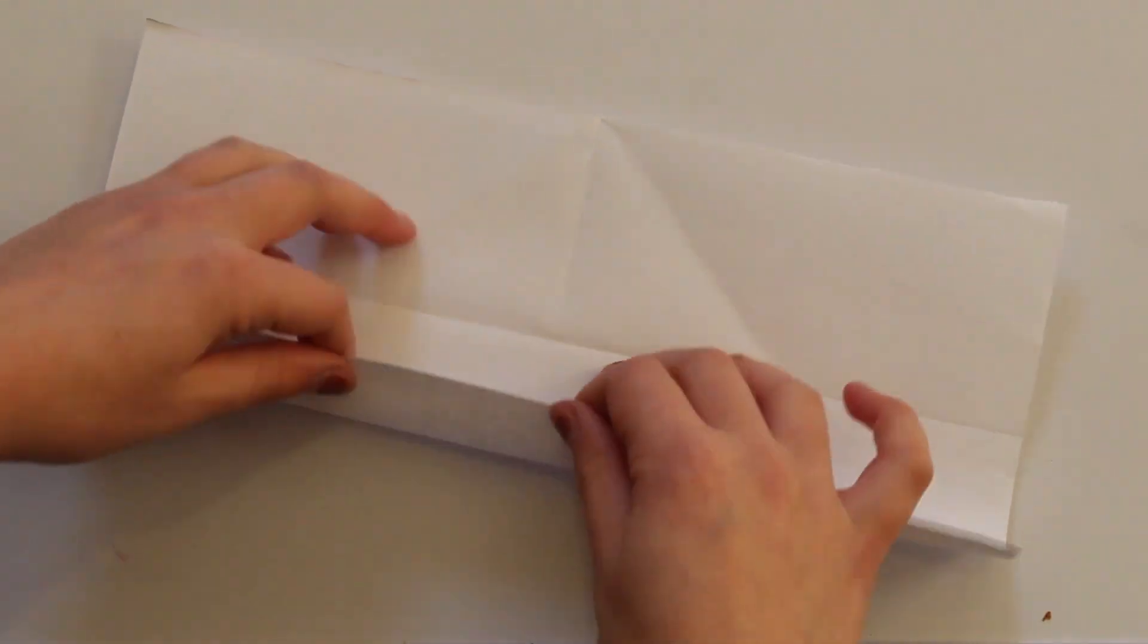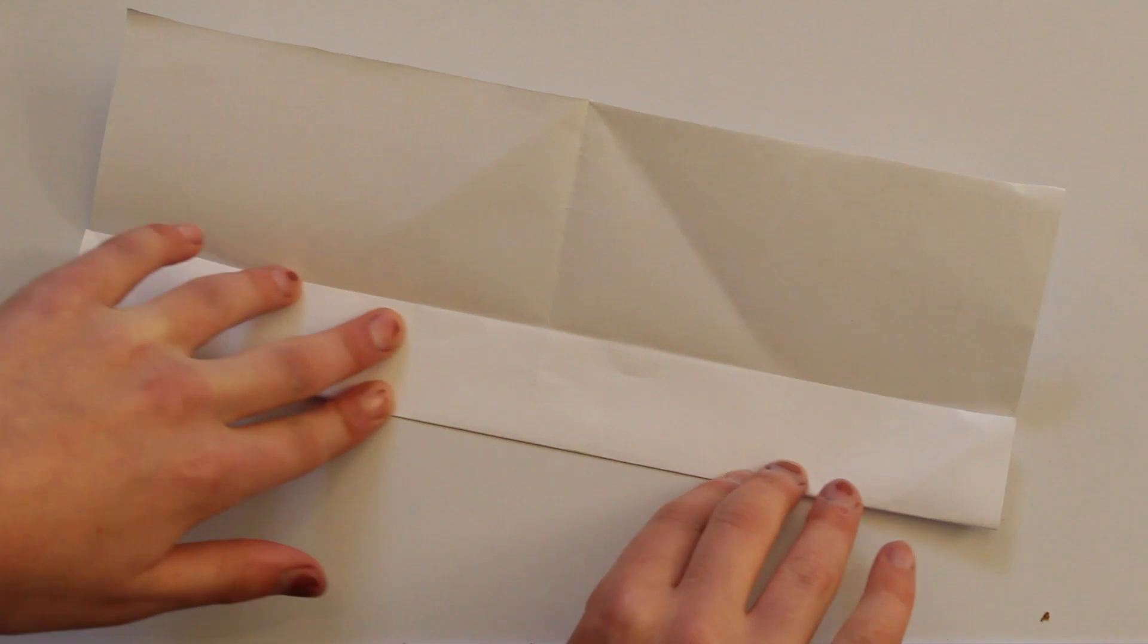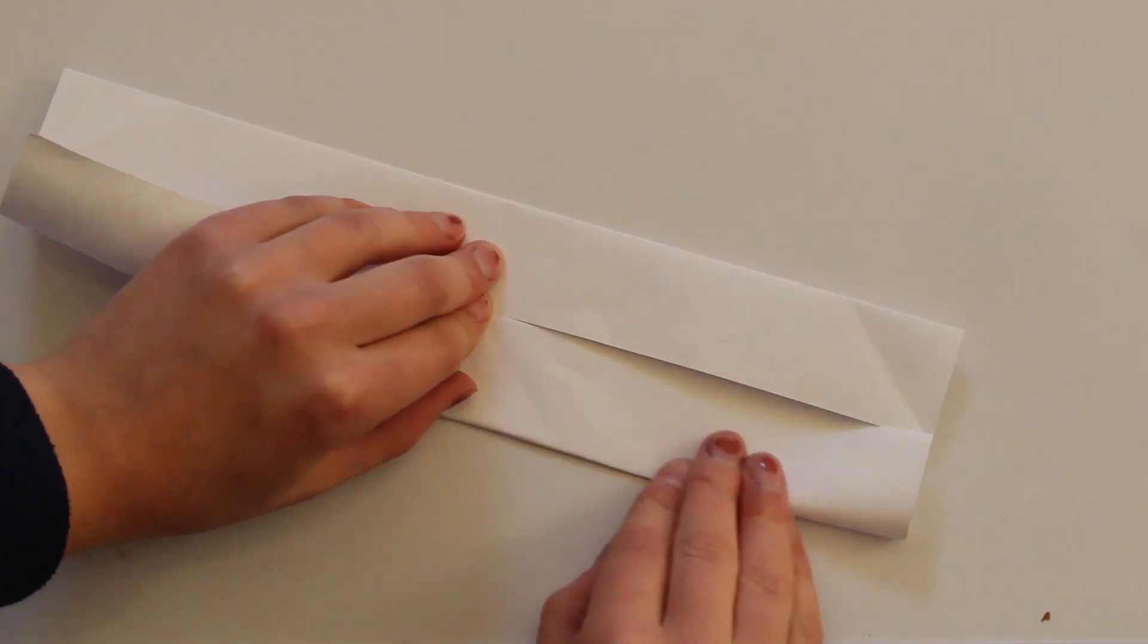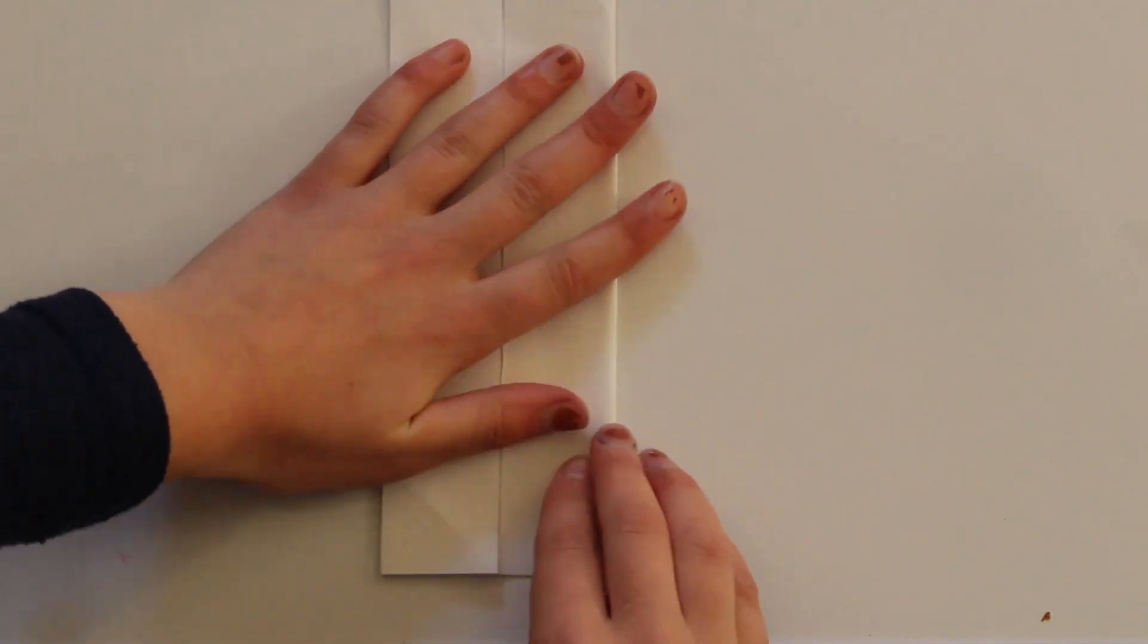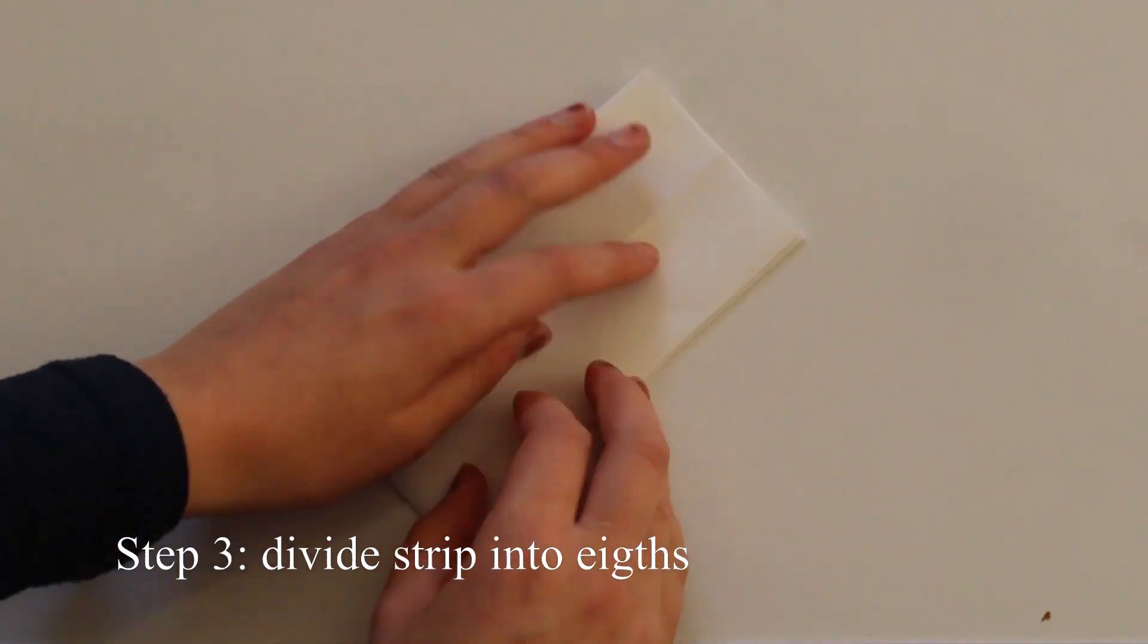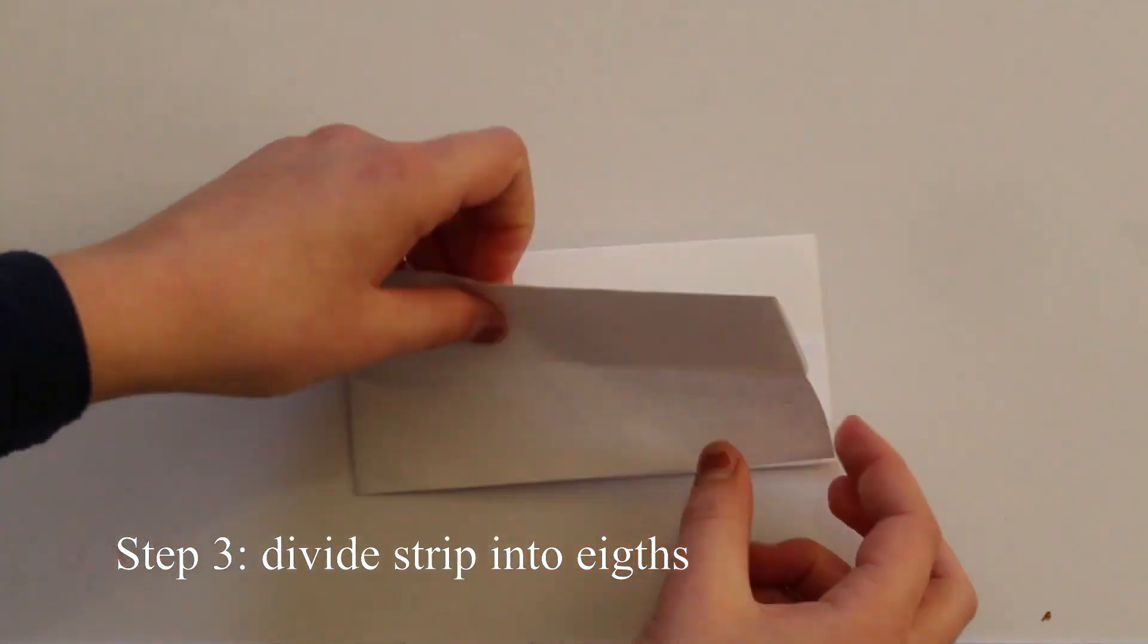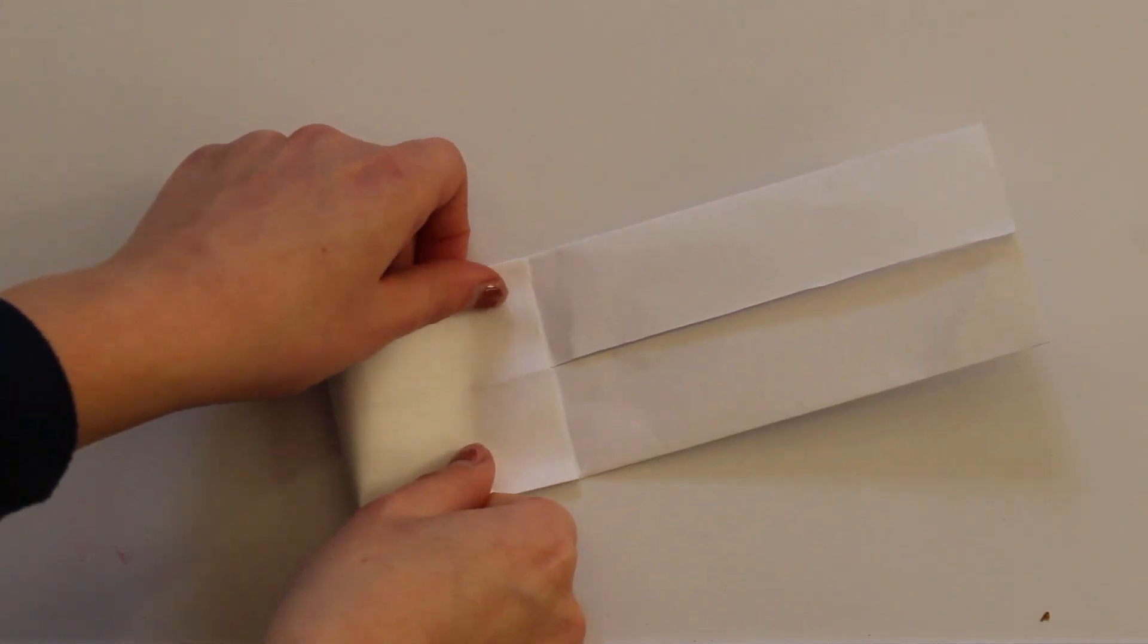So after you have your hot dog fold, we're going to take the top and the bottom of the paper and fold it to the center to make a nice little strip. And then once we have that strip, we'll divide it into eighths. We can do this by first dividing into half and then dividing into fourths by bringing each end to the center fold. So once we have our fourths, we can divide each one in half to make eighths.